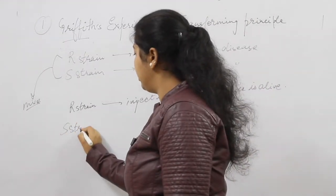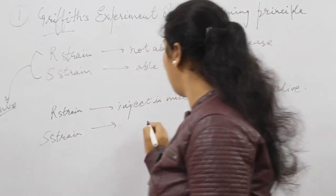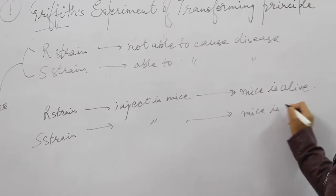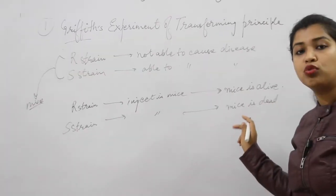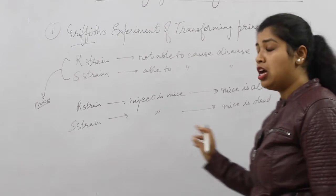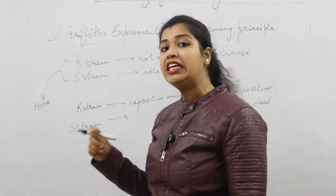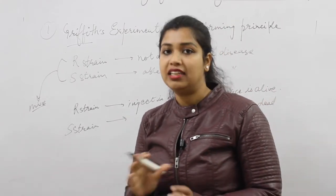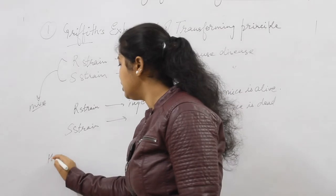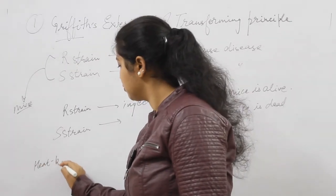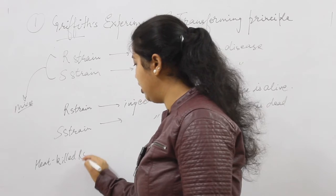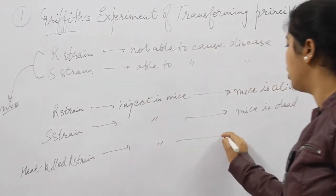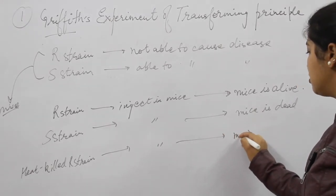With the S strain, when he injected it in mice, he saw that the mouse is dead. It had the disease and died. What did he do now? He heat-killed the bacteria. Because of the heat, the bacteria's structure is damaged and they die. He had heat-killed R strain and injected it in mice, and he saw that the mouse is alive because the bacteria is not functional.